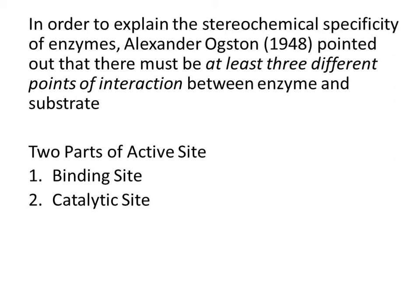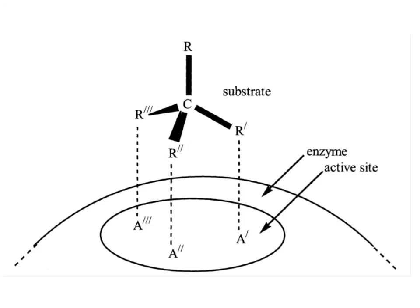Binding sites are linked to specific groups in the substrate, ensuring that the enzyme and substrate molecules are held in a fixed orientation with the reacting groups in the vicinity of the catalytic site. The catalytic site is the actual site where the reaction takes place. Here, site A'' and A''' might represent binding sites for R'' and R''' respectively, and A' the catalytic site for a reaction involving R'.